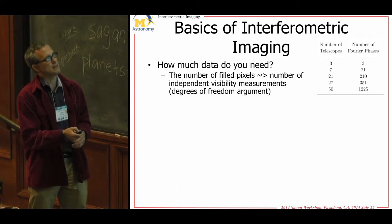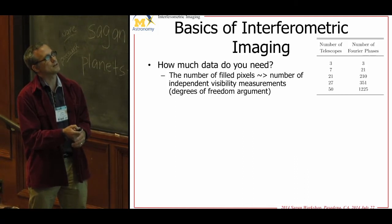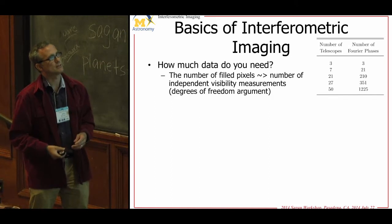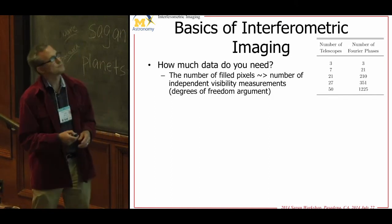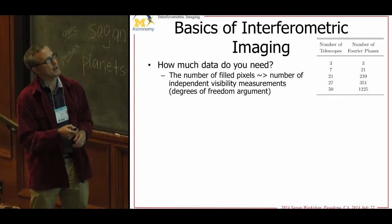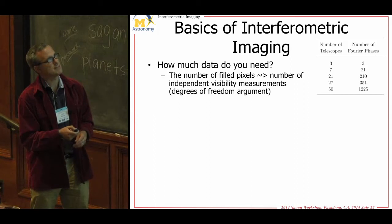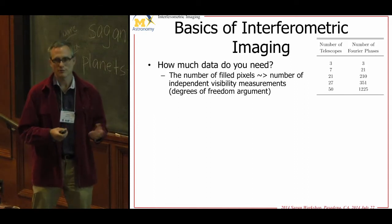The VLA has 27 telescopes giving 350 instantaneous baselines. ALMA gives another factor of three. The CHARA array, with six telescopes, gives 15 instantaneous baselines — just for reference, that's the best infrared interferometer we have on the ground.